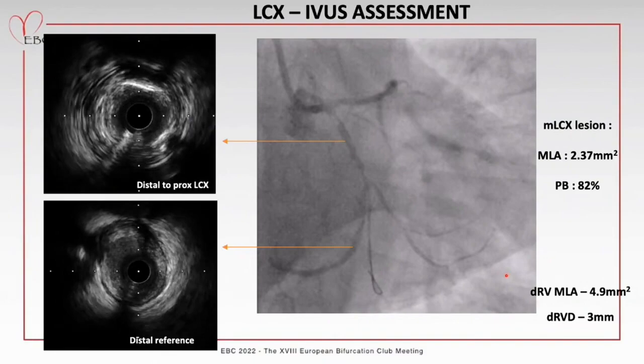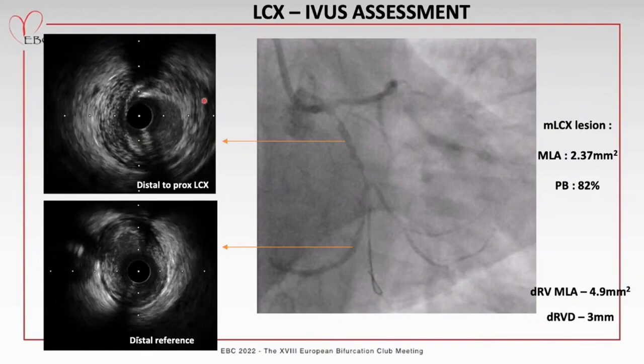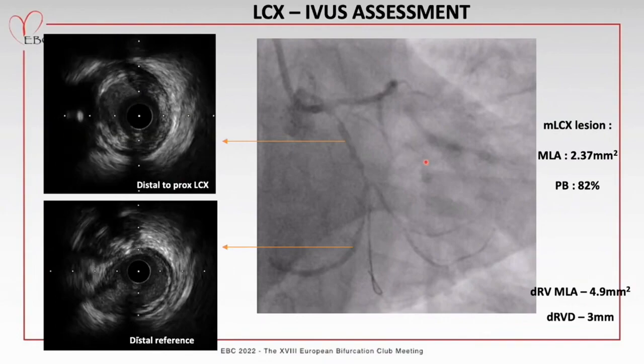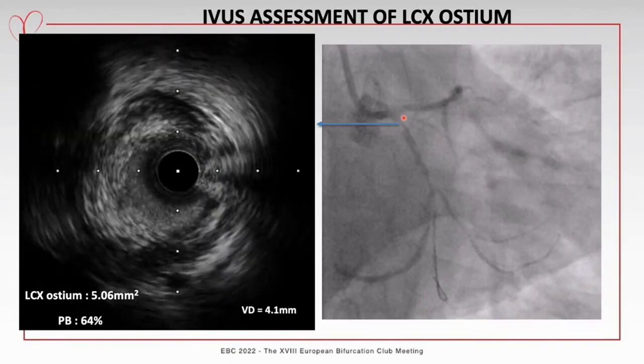Check angiogram confirmed the circumflex was the dominant system. Intravascular ultrasound evaluation was then performed. Pullback from the distal circumflex showed reference vessel diameter of 3mm, diffuse plaque extending from distal circumflex beyond the obtuse marginal origin, with a critical narrowing at the obtuse marginal origin showing mixed plaque with areas of superficial calcium. MLA was 2.37mm² with plaque burden of 82%.